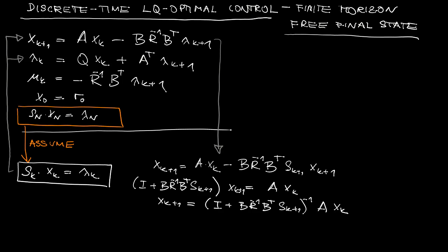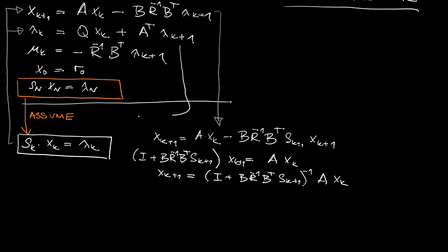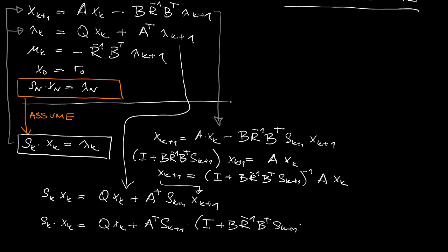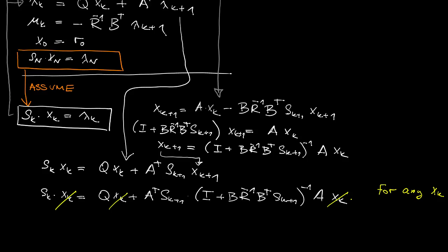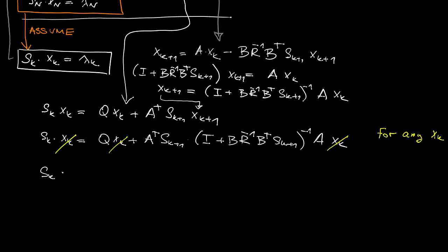And now let's have a look at what will happen if we substitute this sweep assumption into the co-state equation. So again this is what we get and then from the state equation we can substitute here for the x at k plus 1 and this is what we get, things are getting somewhat messy. And now since this holds for any x, as a consequence of this fact we can write now this equation with the s terms only.